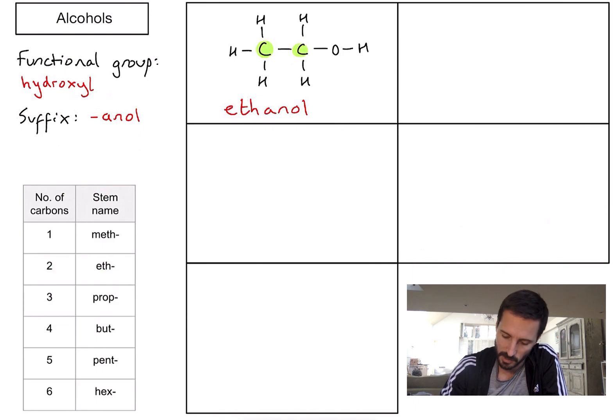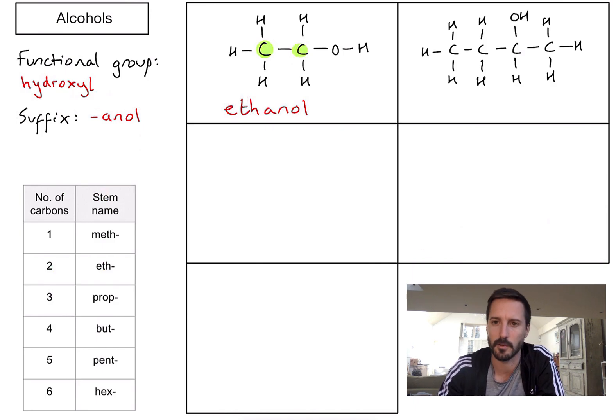Let's have a look at a second example. Again, there's my hydroxyl functional group sticking off the side. I haven't showed the bond between the oxygen and the hydrogen just to keep things a bit neater. So let's first count the number of carbons in the main chain. I've got one, two, three, four, so the stem part of my name is going to be but. Let's write that down. I've got but.